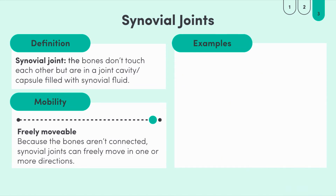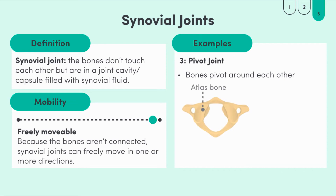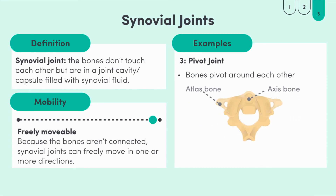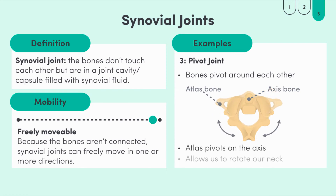The next type of synovial joint is the pivot joint, pretty clearly named after a movement — these joints allow bones to pivot around each other. The best example of a pivot joint is at the neck between the atlas and axis bones, which are the first two vertebrae of the spine. Having a pivot joint between those vertebrae is the reason we can move our neck from side to side.